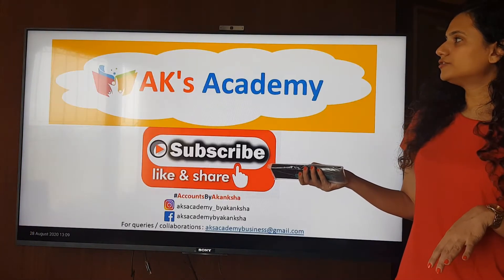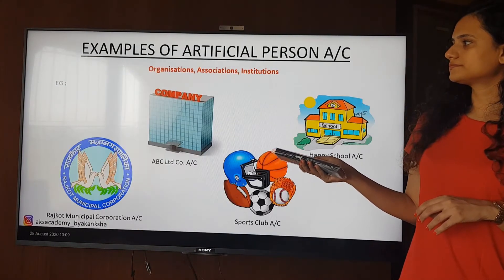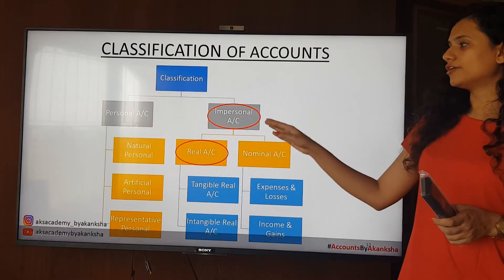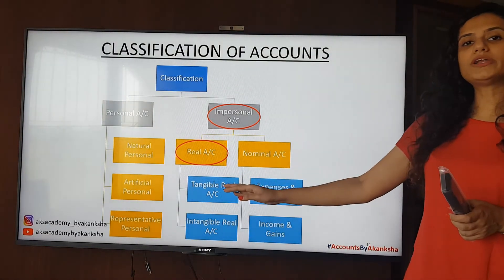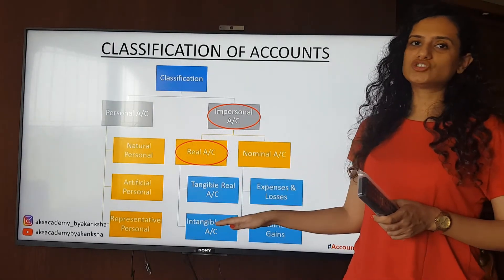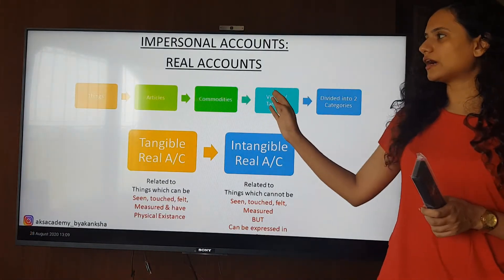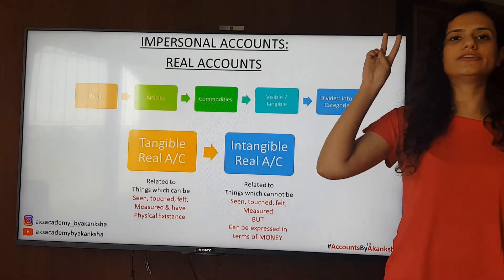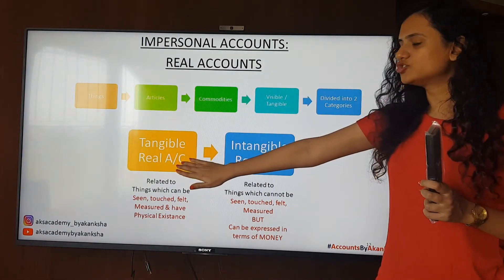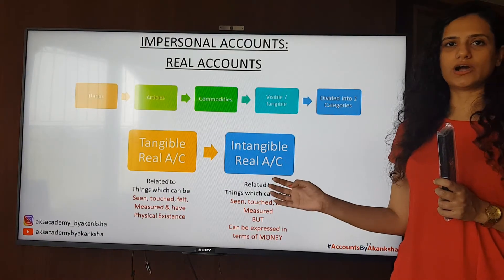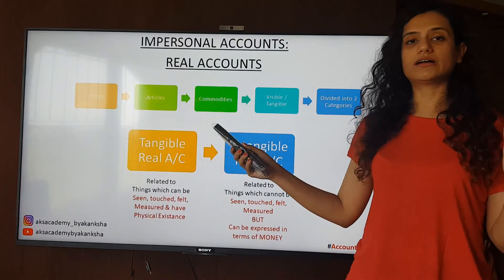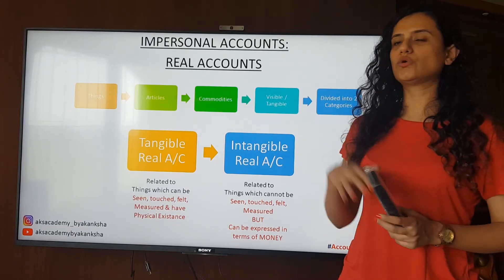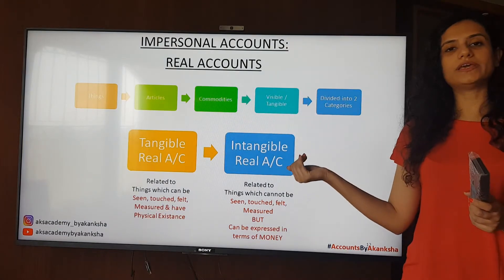Next we move on to impersonal accounts — specifically real accounts. Real accounts deal with things, articles, and commodities that are visible and tangible. They are divided into two categories: tangible real account and intangible real account. The easiest way to understand real accounts is that they represent any asset of yours. An asset can be either a tangible asset or an intangible asset.